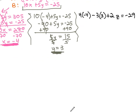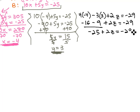We just need to solve what's left to get our answers. Multiplying, negative 16 minus 9 plus 2z equals negative 29. Combining like terms, negative 25 plus 2z is negative 29.